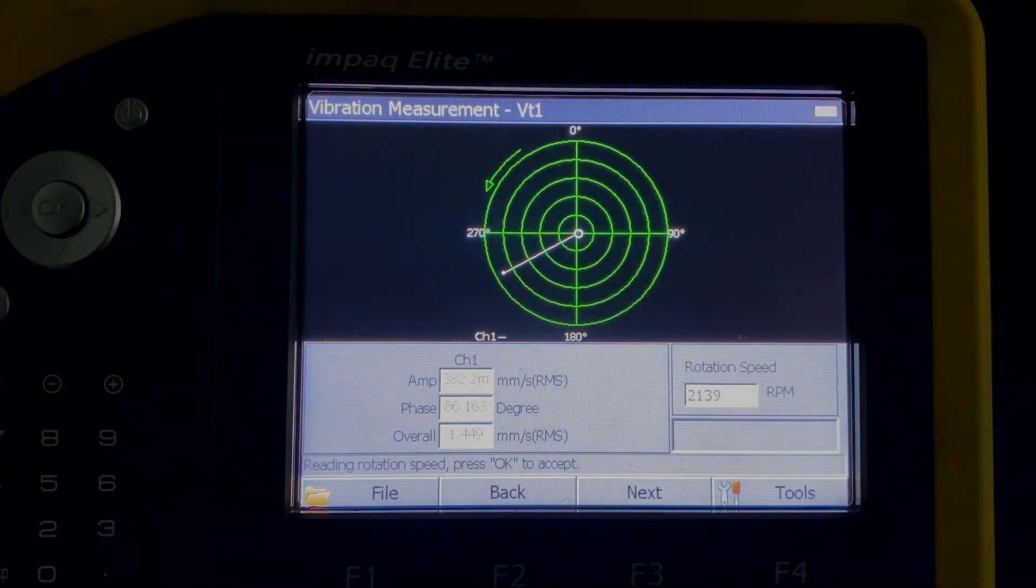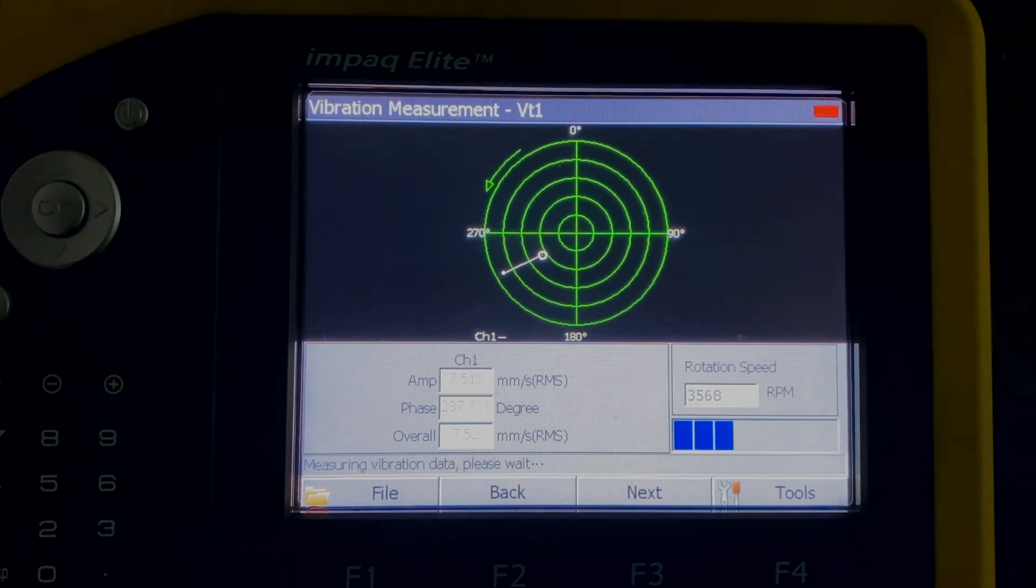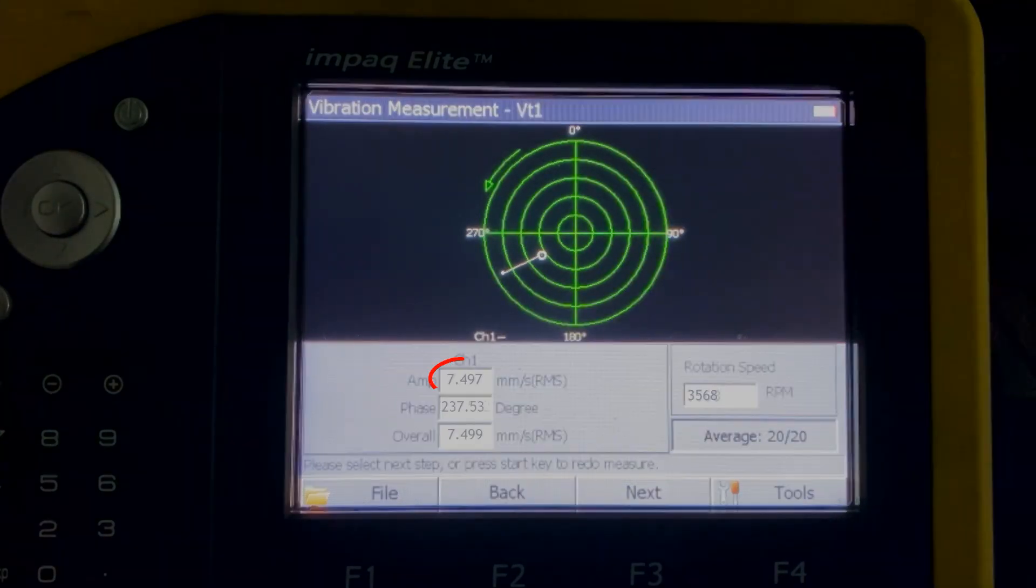After 20 times the average, the vibration level with the trial weight, you will notice that it is reduced to around 7.5 millimeters per second, which is about 50% less than the initial vibration. The phase of the initial vibration is at 240 degrees. After the trial weight is added, it now becomes 237 degrees, almost no change at all.